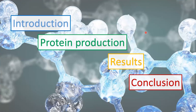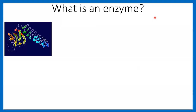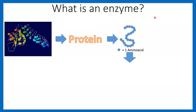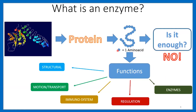An enzyme is essentially like this — this is the ripple representation of an enzyme, but at the molecular scale, an enzyme is a protein. A protein is essentially a chain of amino acids, and proteins have a lot of functions. Some proteins are also enzymes. Is it enough to describe a protein as only a chain of amino acids? The answer is no, because essentially a protein must be folded.